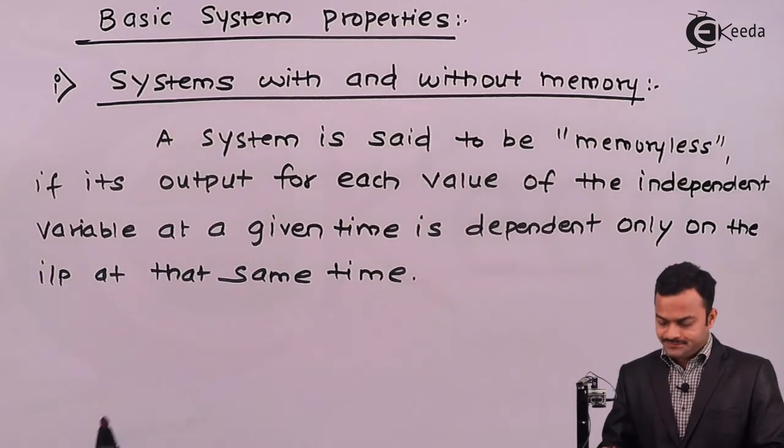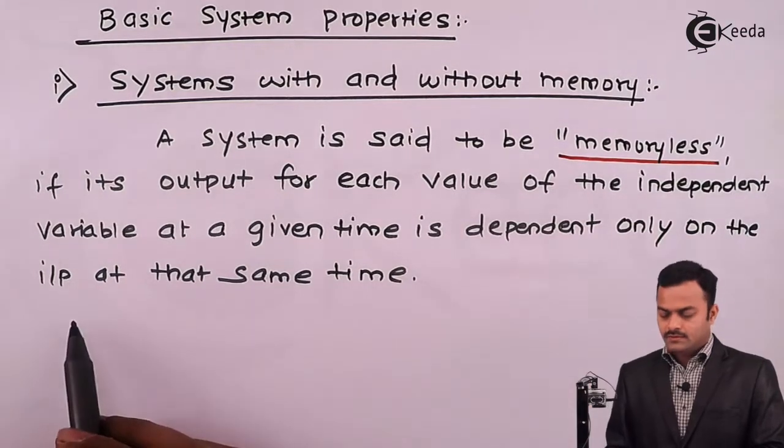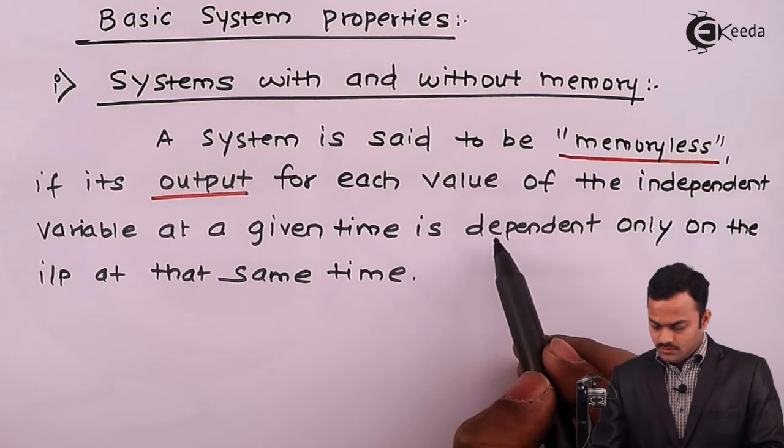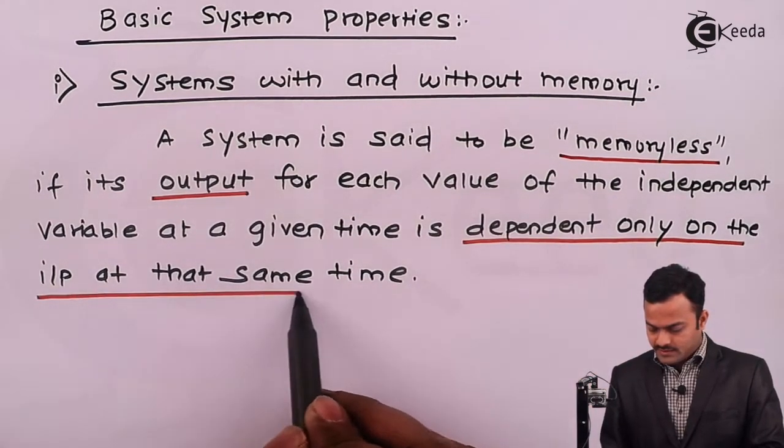So the keywords are this: a system is said to be memoryless when the output depends only on the input at that same time.